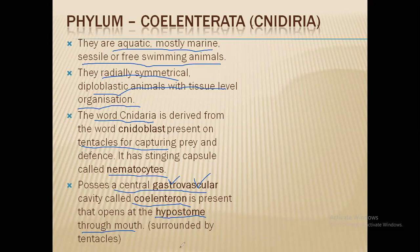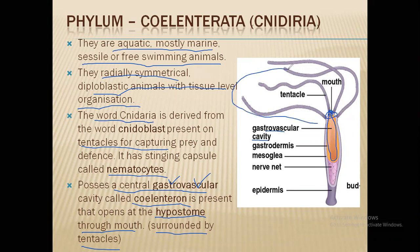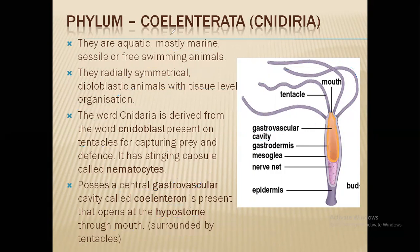The coelenteron opens outward through the mouth, which is surrounded by tentacles — finger-like projections. Looking at the diagram, the central body cavity in the center is the gastrovascular cavity or coelenteron. The mouth opening is at the anterior part called the hypostome, and it is surrounded by tentacles. These tentacles grab food and bring it to the mouth, and at the same time carry out the defense mechanism.